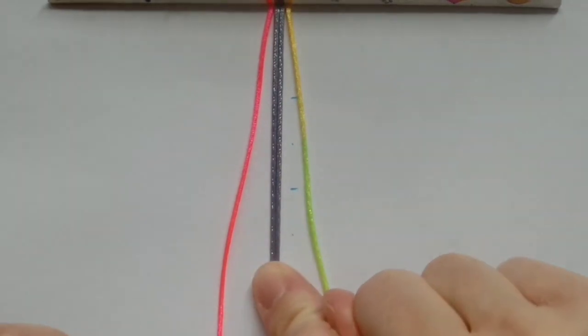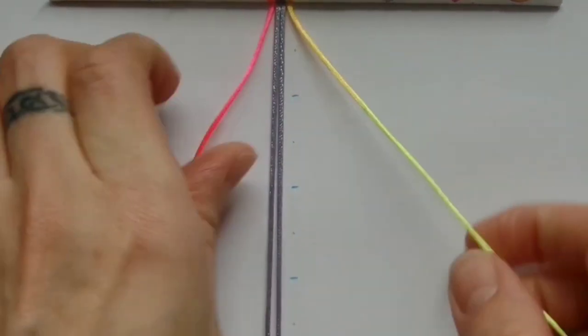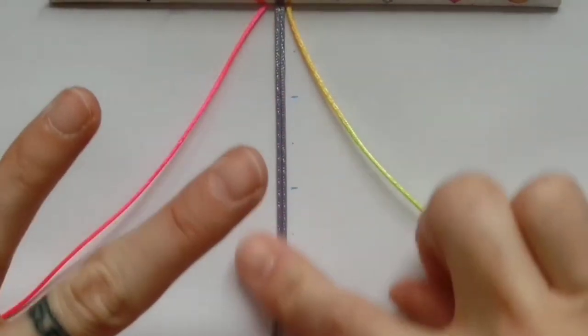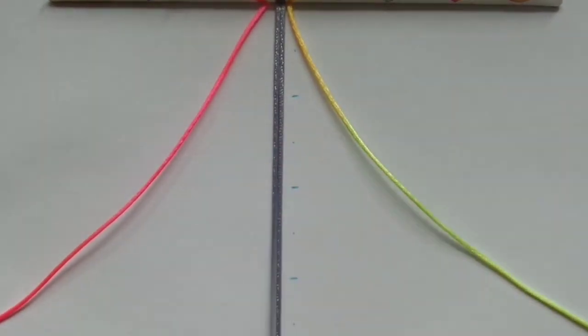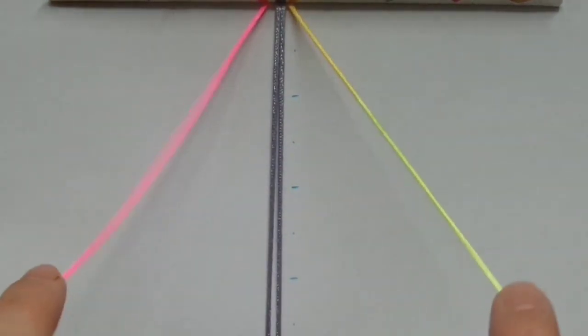To begin you'll have your cord or cords in the center and you'll have a cord on either side. So this is the holding cord which you will be knotting over, and these are the working cords which you will be knotting with.